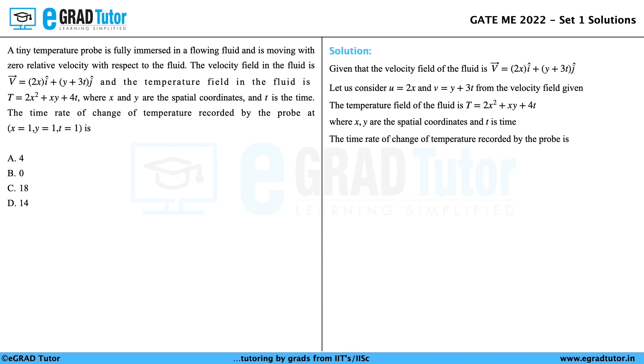The time rate of change of temperature recorded by the probe is given by dT/dt equals partial T/partial x times dx/dt plus partial T/partial y times dy/dt plus partial T/partial t times dt/dt.